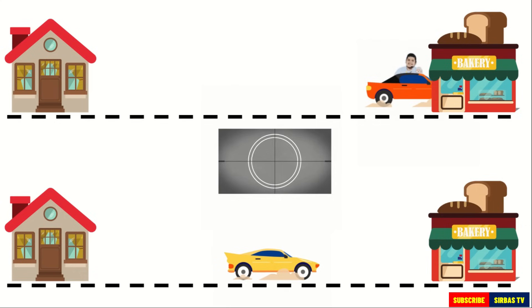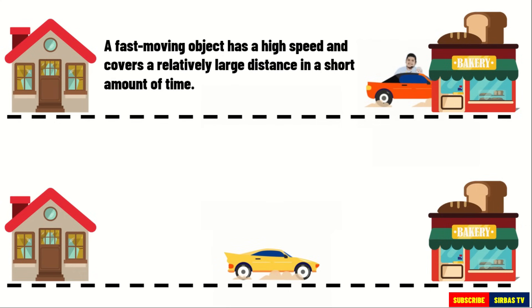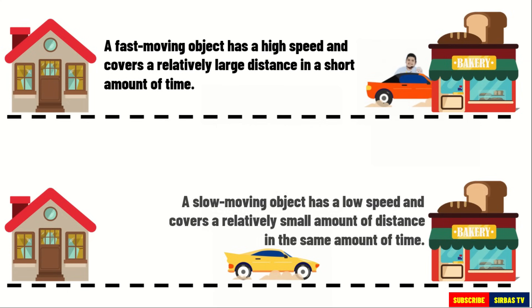A fast-moving object has a high speed and covers a relatively large distance in a short amount of time. This is in contrast to a slow-moving object that has a low speed — it covers a relatively small amount of distance in the same amount of time. An object with no movement at all has a zero speed.